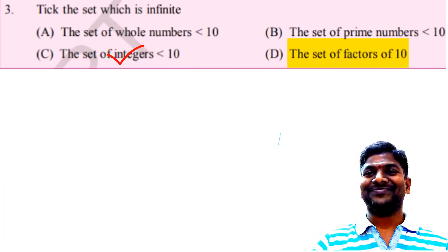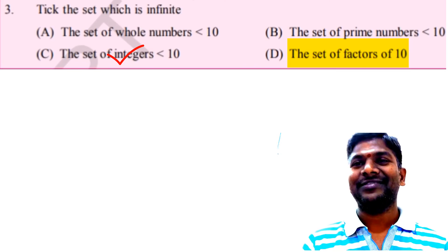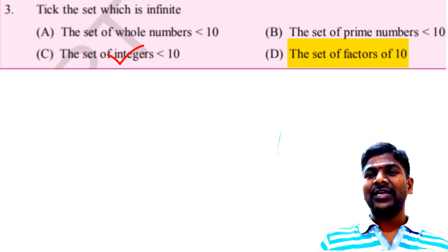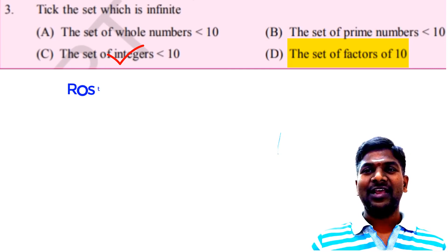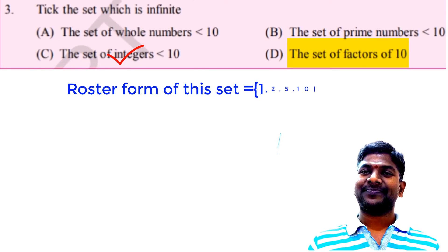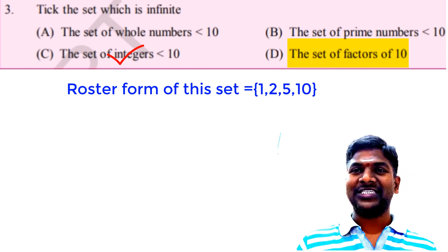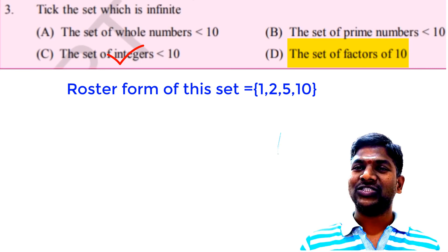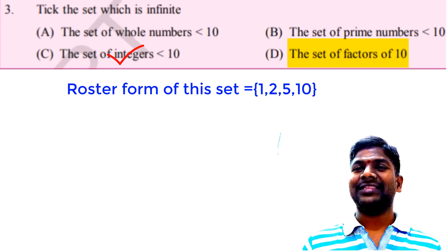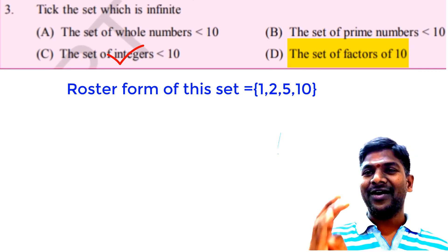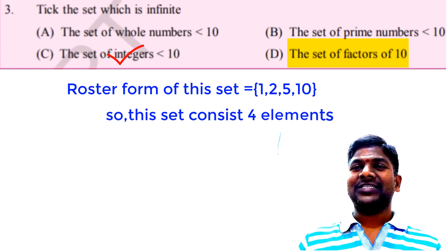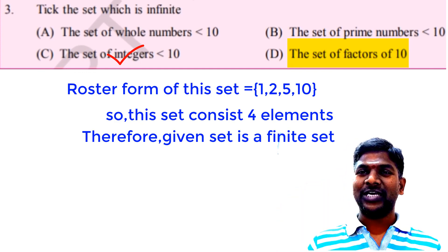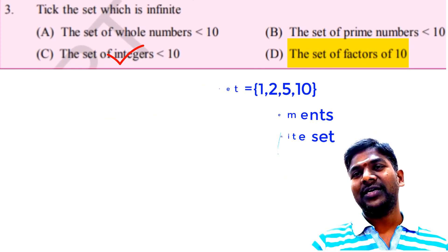The fourth question: the set of factors of 10. A factor is a number which divides the given number exactly. The numbers that divide 10 exactly are: 1, 2, 5, and 10. There are clearly 4 elements in this set. It is possible to count them, so it is a finite set — not an infinite set. We cannot put a tick mark on question four.